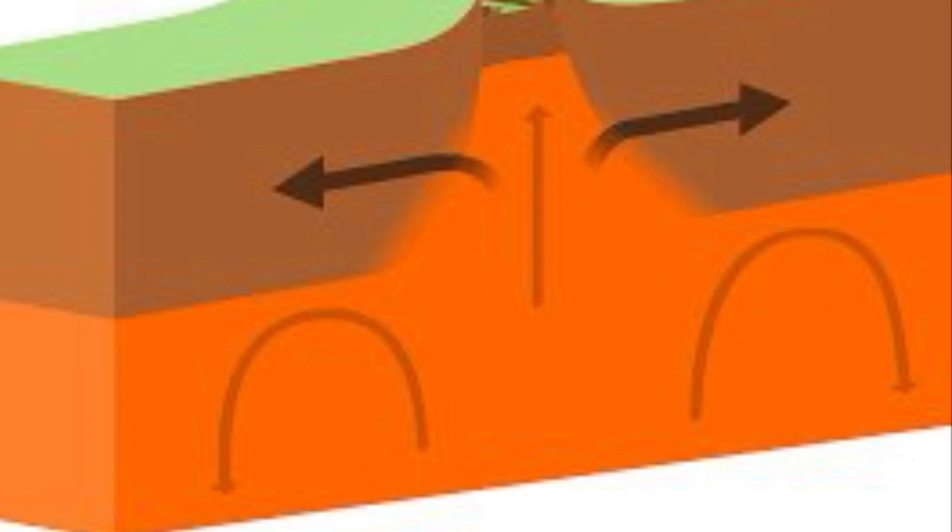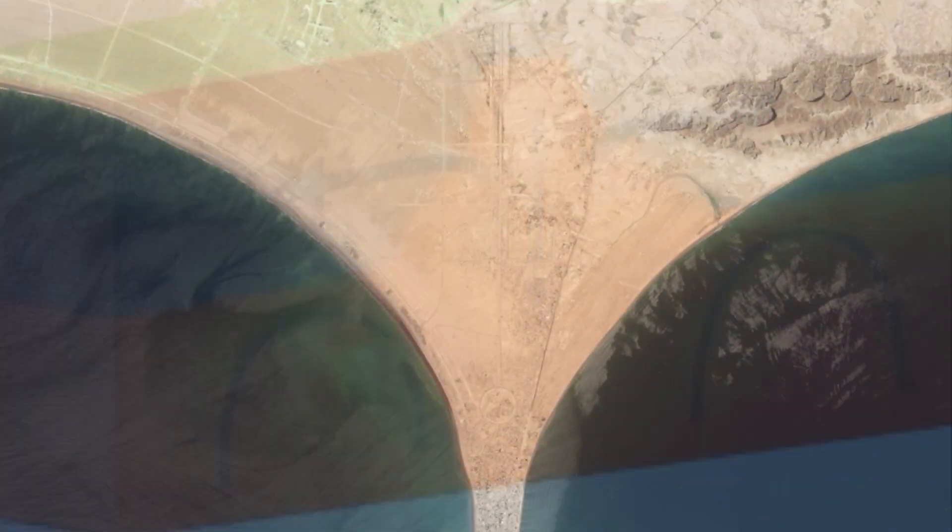Divergent boundary: here plates drift apart from each other, forming a rift zone. This kind gives birth to new ocean floors, like this one for example.